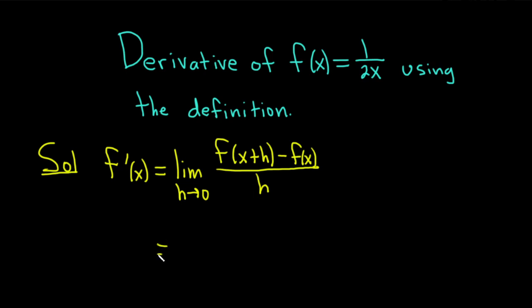So this is equal to the limit as h approaches 0. Let's work out f of x plus h. So f of x is 1 over 2x. So f of x plus h, it's the same thing except you replace x with x plus h. So it's 1 over 2 parentheses x plus h. And we have the minus and then we have f of x, which is just 1 over 2x. All of this is being divided by little h.